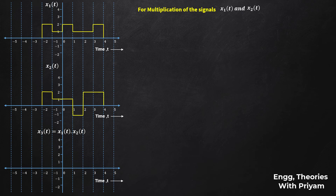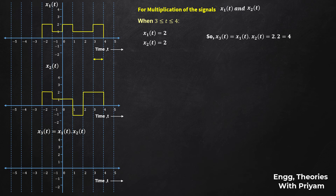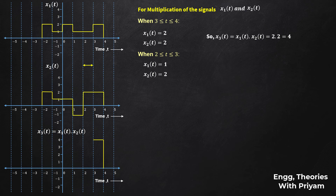When t is in [3, 4], x1(t) = 2 and x2(t) = 2, so x3(t) = 2 × 2 = 4. When t is in [2, 3], x1(t) = 1 and x2(t) = 2, so x3(t) = 1 × 2 = 2.